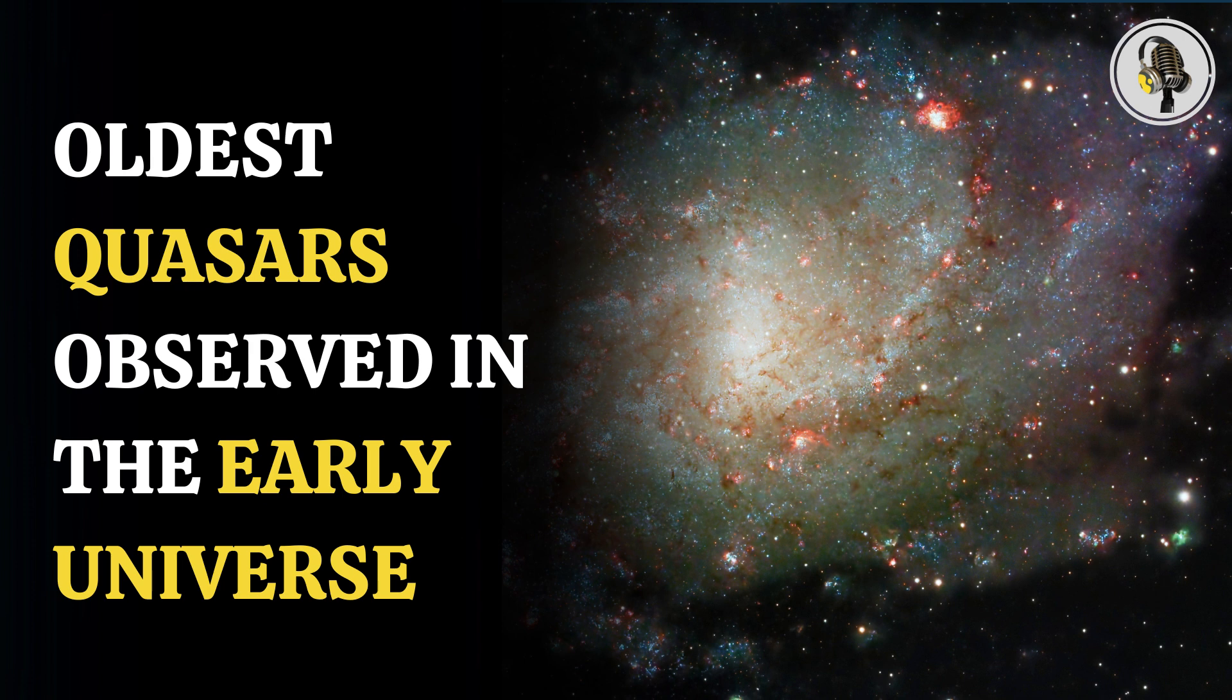Quasars are expected to sit in crowded fields with several galaxies around them. But a new MIT-led study says that astronomers have observed some ancient quasars that are drifting away alone in the early universe.